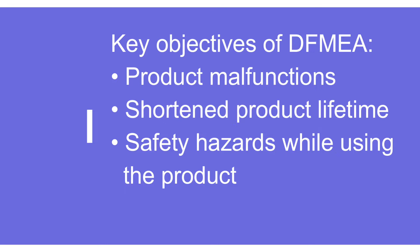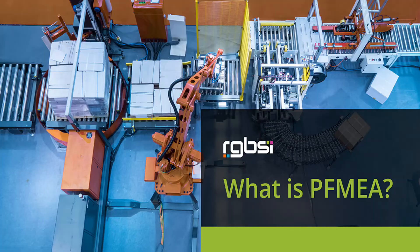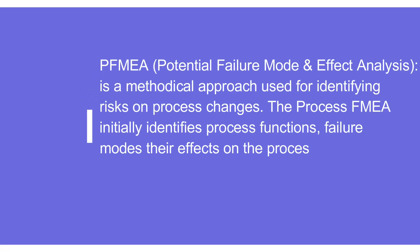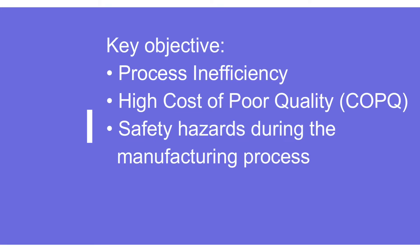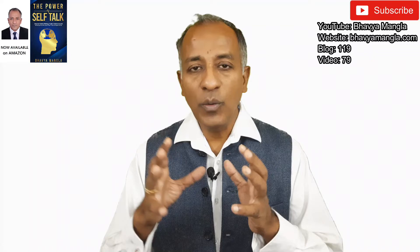When we talk about Process FMEA, our main intent is that with the help of a cross-functional team, we identify the different risks related to the processes. The key process failures an organization can consider include process inefficiencies, the high cost of poor quality, and safety hazards related to the manufacturing processes.